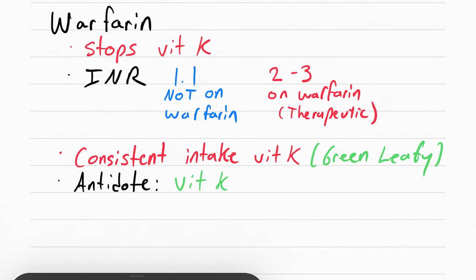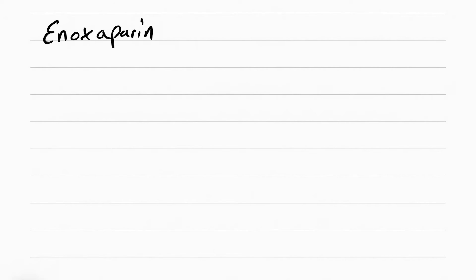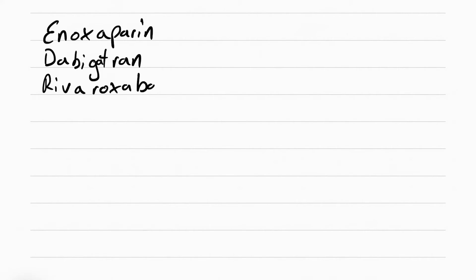Other anticoagulants that can be used to prevent DVTs include enoxaparin, dabigatran, and rivaroxaban. Notice how they all end in -rin, -ran, and -ban.